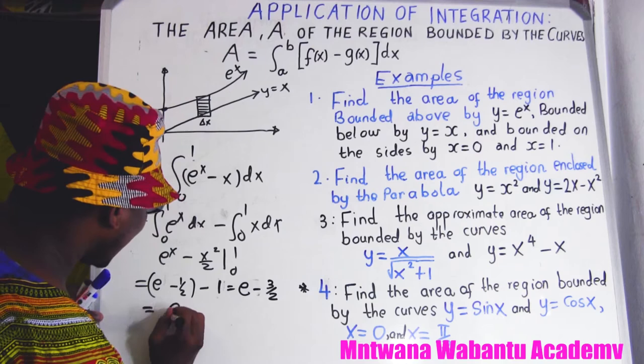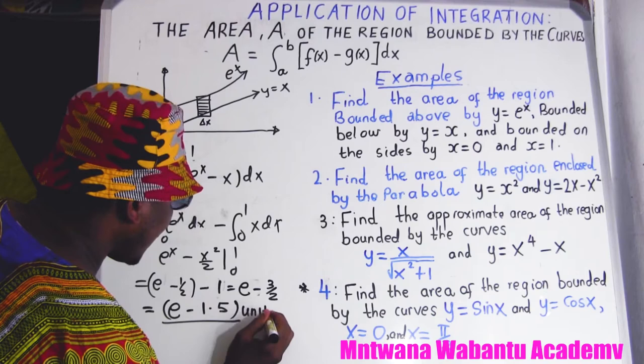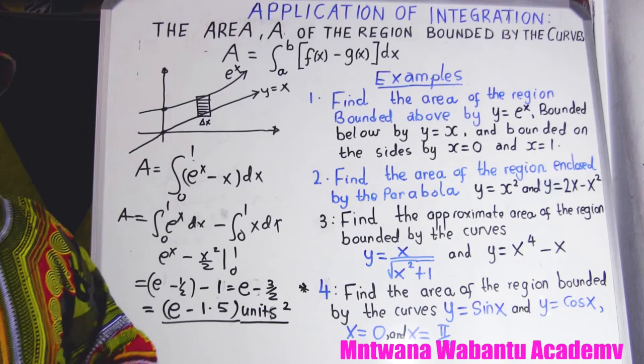So we get e minus one half minus one, which equals e minus three over two, or equivalently e minus 1.5. The area is e minus 1.5 unit squared.